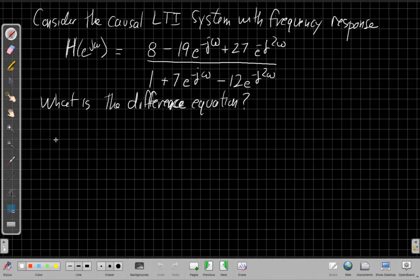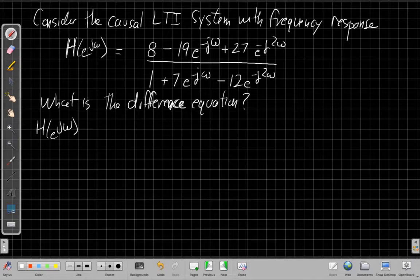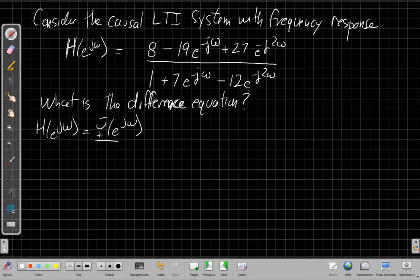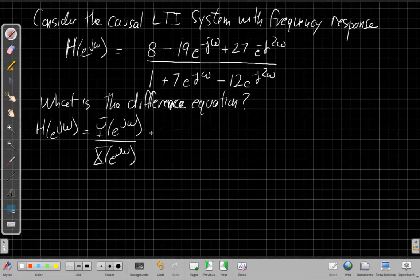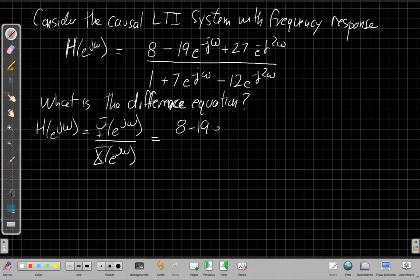And the key to this is basically to go the other direction we did earlier, which is to start by saying I remember that the frequency response H of e to the j omega in the frequency domain is the ratio of the output Fourier transform to the input Fourier transform. So I'm going to set that equal to my equation here.